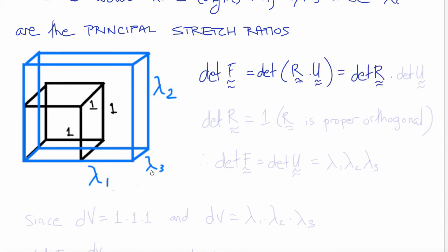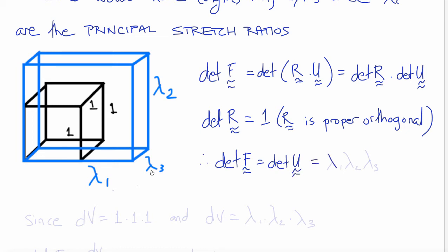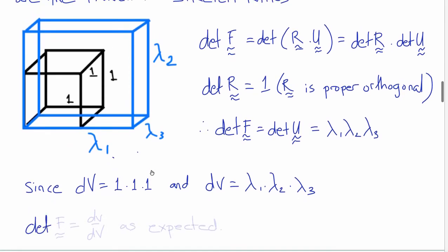The determinant of F from the Polar Decomposition Theorem is also the determinant of R times U, which equals det(R) times det(U). R is an orthogonal rotation tensor, so its determinant is 1, meaning det(F) = det(U), which in this case is the product of the principal stretches λ₁λ₂λ₃. This is the deformed volume of our original unit cube, which had undeformed volume 1×1×1. Therefore the ratio of deformed to undeformed volume, λ₁λ₂λ₃, is the determinant of F, as expected.